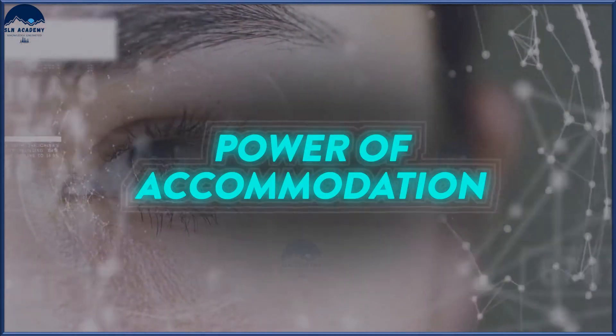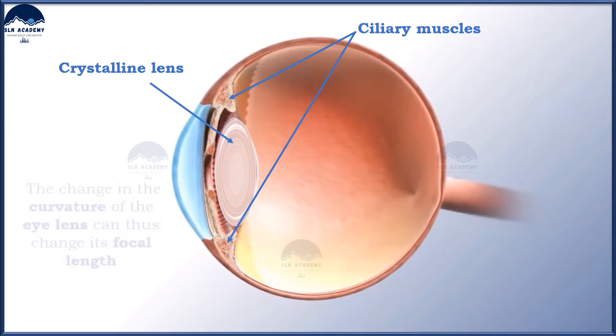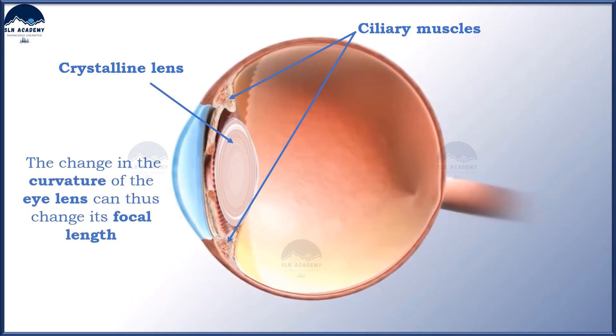Power of accommodation. The eye lens is composed of a fibrous, jelly-like material. Its curvature can be modified to some extent by the ciliary muscles. The change in the curvature of the eye lens can change its focal length.